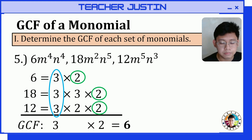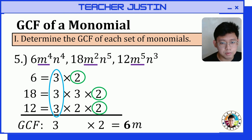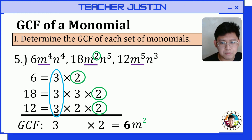We're not done yet because we still have variables. Let's check for the variable m. All three monomials have variable m, so we copy it and identify the smallest exponent. The smallest exponent of m in this set is 2, so m squared is the GCF contribution from variable m.